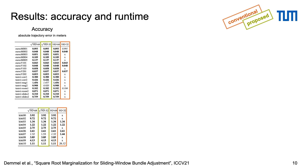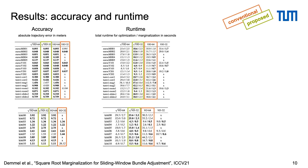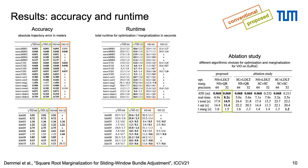Our VO and VIO experiments on real-world datasets show that, unlike the conventional approach, the square root formulation ensures the same accuracy in single precision. Optimization in the proposed system is around twice as fast, and marginalization, while slightly slower, makes up only a small fraction of total runtime.